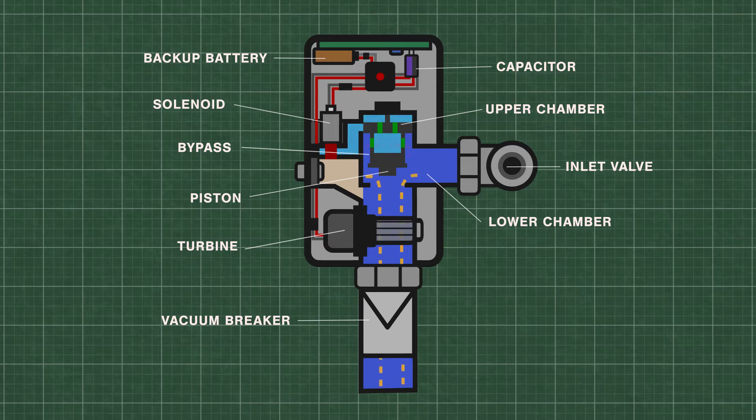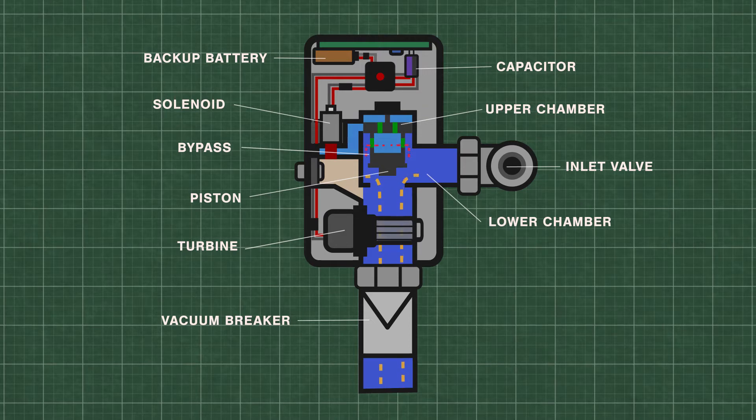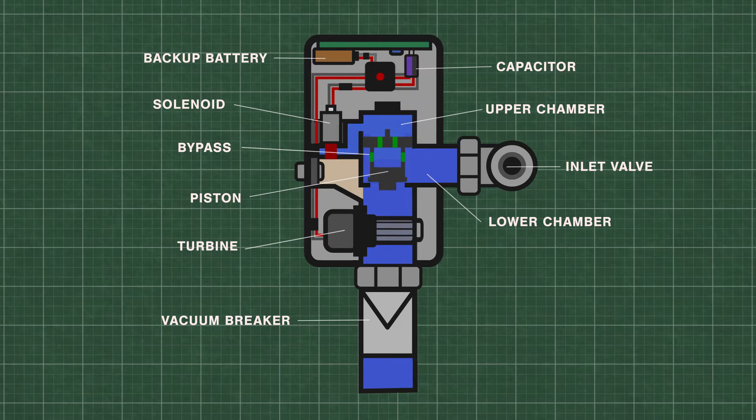During the flush, some of the water is forced back into the upper chamber through a small bypass hole in the piston. The flush continues until the pressure equalizes and pushes the piston down onto the valve seat.